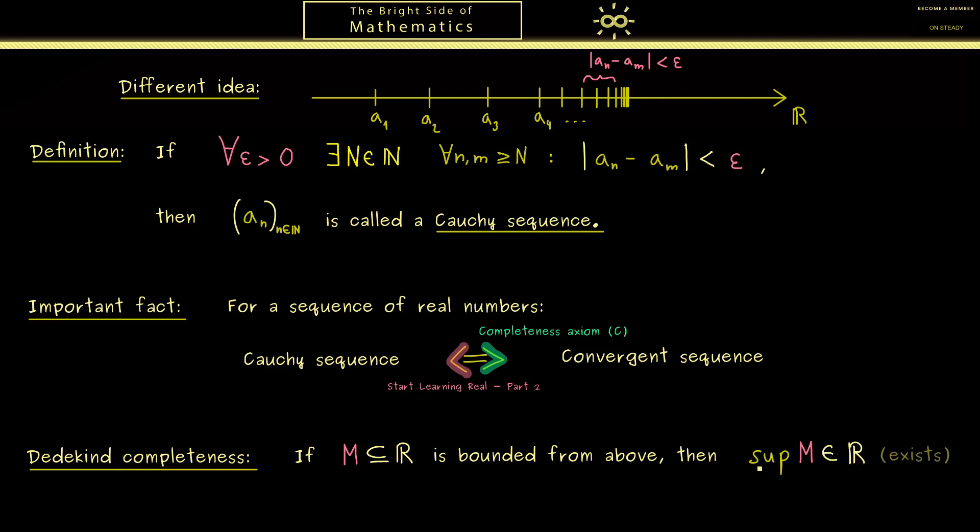Please recall that we defined the supremum in the last video. And maybe not so surprising we have the same thing for the infimum as well. So if we have a set that is bounded from below then the infimum exists as a real number.